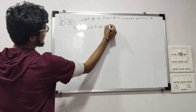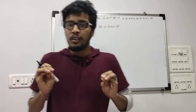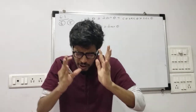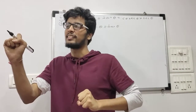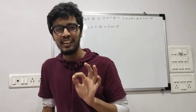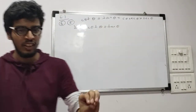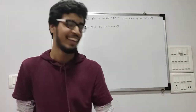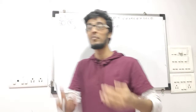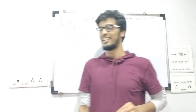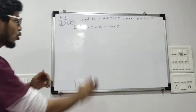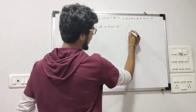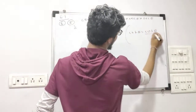Now you have to think — whenever there is a question to prove LHS equal to RHS, look very carefully at the LHS. Is it already in sin and cos? No. So what you have to do is convert it into sin and cos. So now we have cot theta and tan theta — can we convert them into cos and sin using a formula?